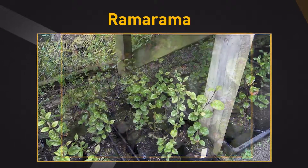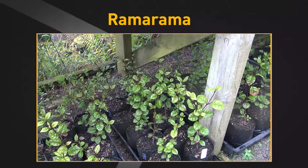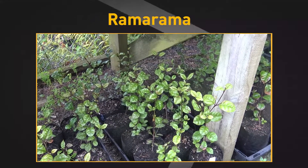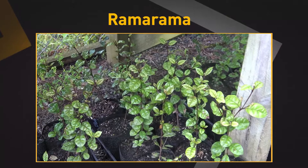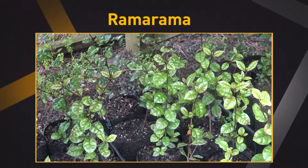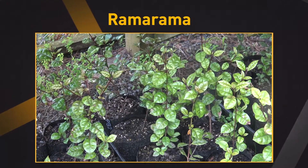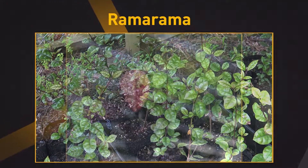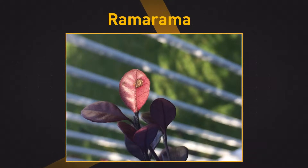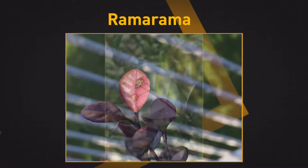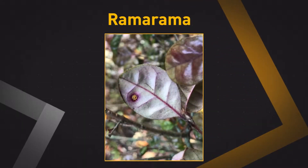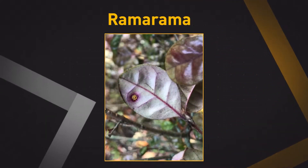A range of native species such as liverworts, reptiles, birds and other plants are dependent on myrtles either partially or wholly. This is a Rama Rama with myrtle rust. It has raised yellow pustules on the upper surface of the leaf.